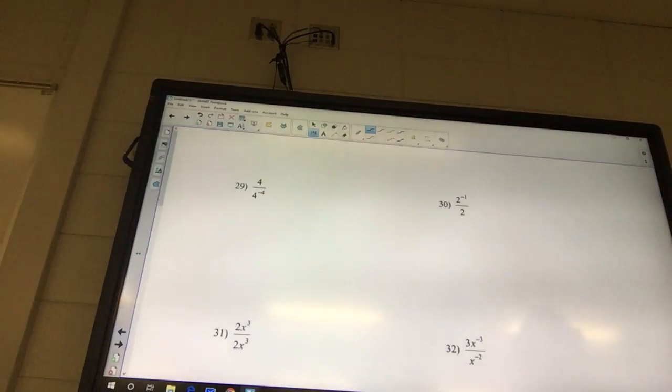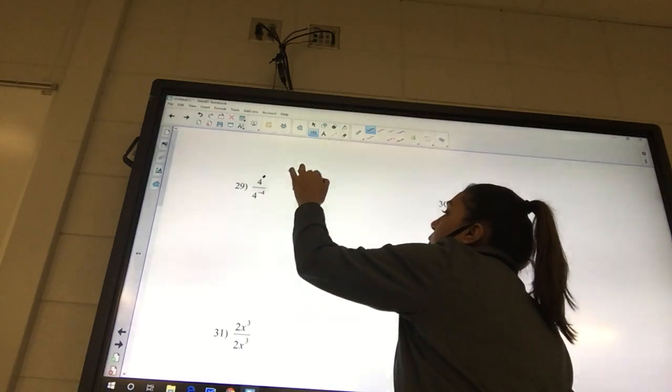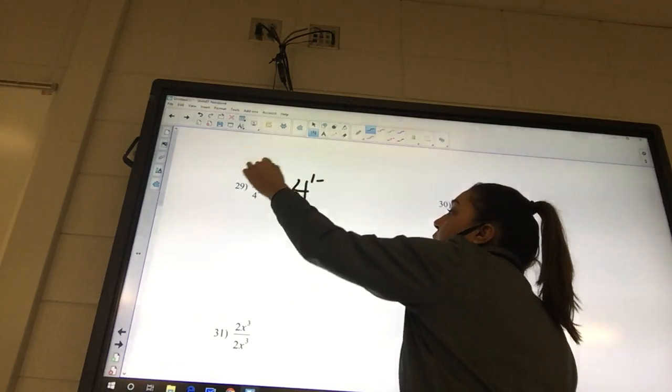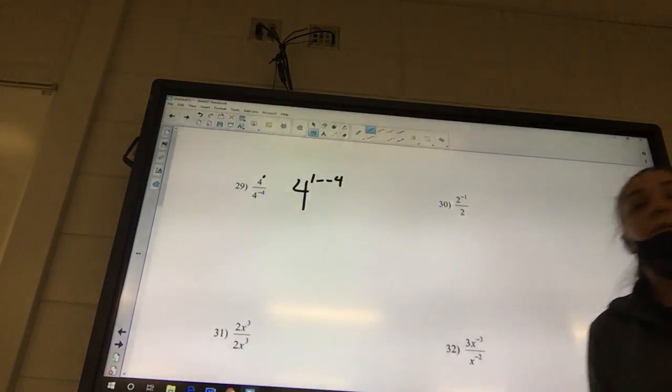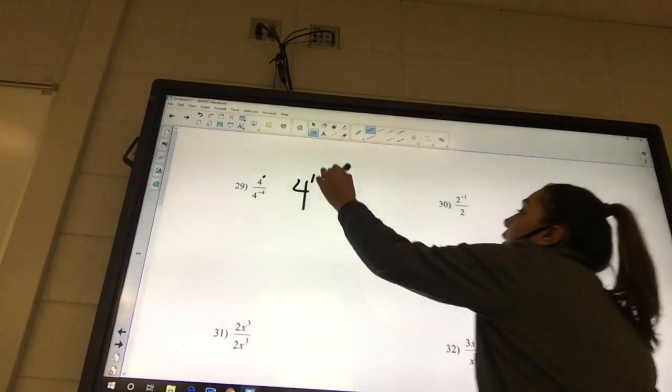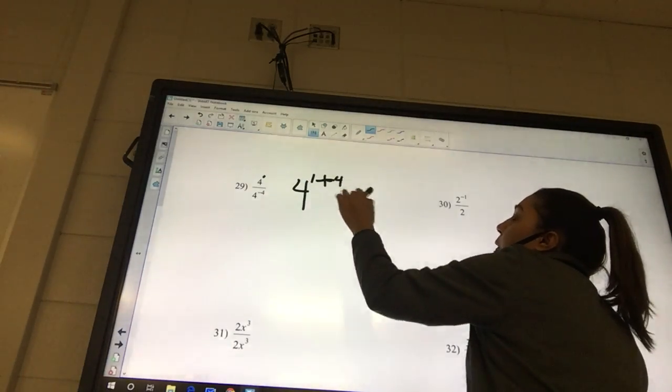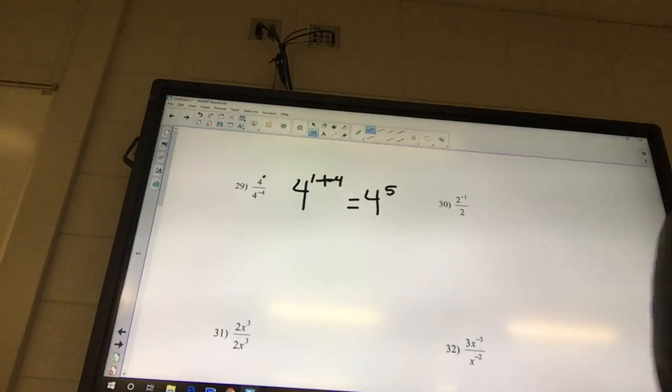So 29 is the division rule. We subtract the exponents. On the very first one, it's just numbers. So it's going to be 4 to the 1 minus, we do top minus bottom, so it's going to be minus negative 4. What's a minus minus? It's a positive. So it's going to be 4 to the 5th power. Are we finished? No. We are finished, because it's just numbers. The numbers, we leave them alone.